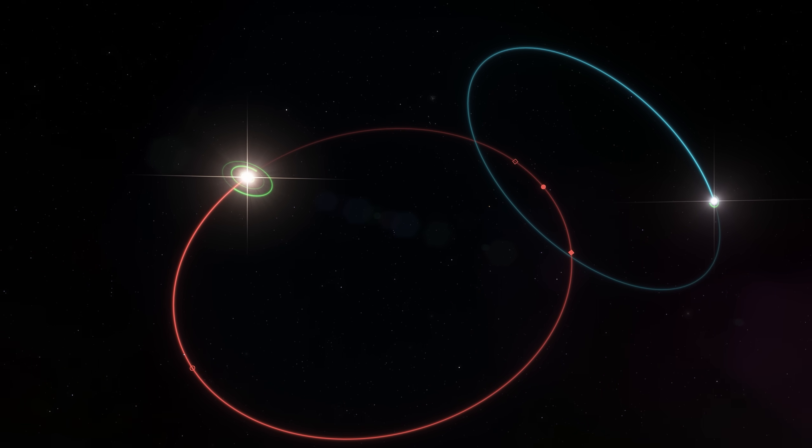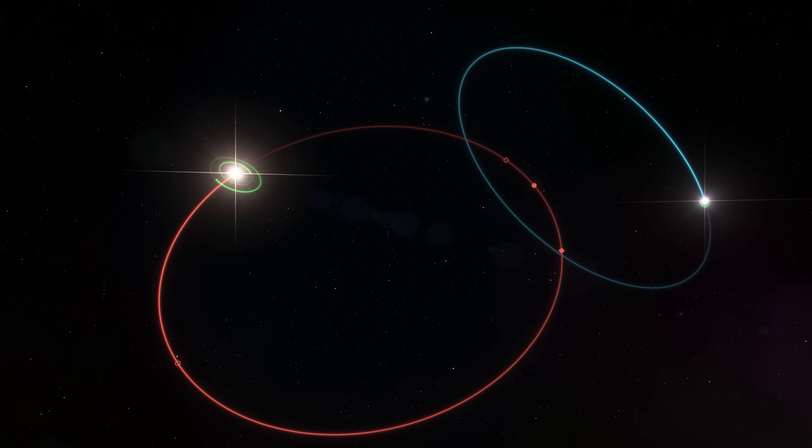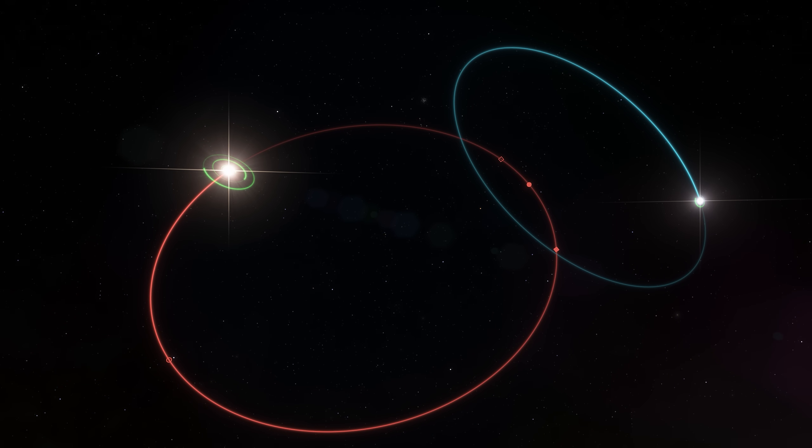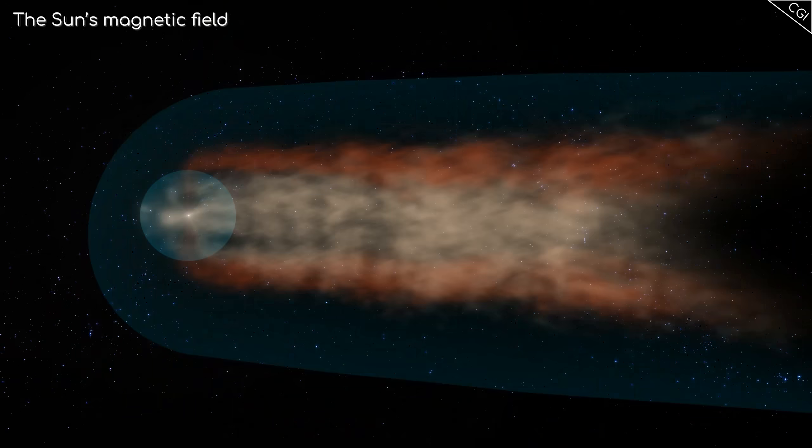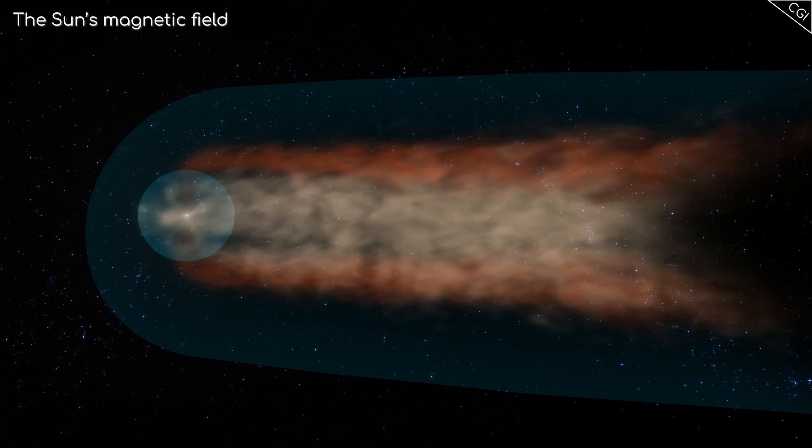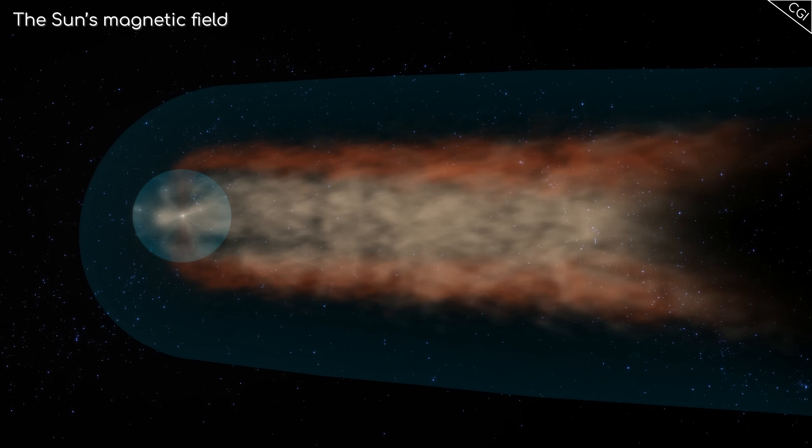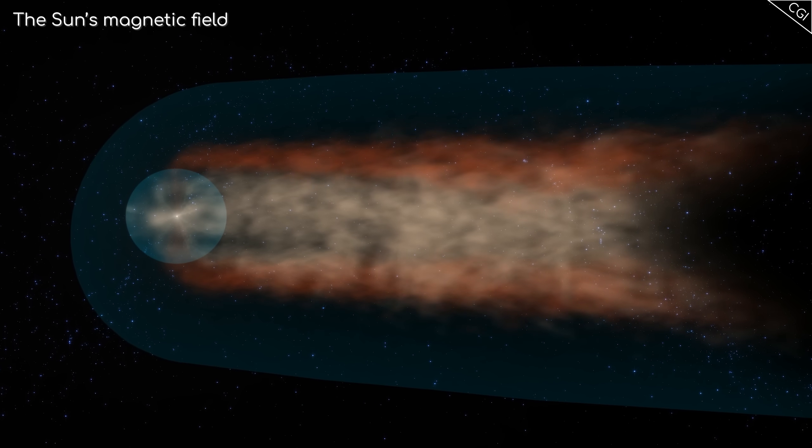The second star would be easily visible in the night sky, but may not make much of an impact during the day, depending on its luminosity. Stellar winds from the other star would have little impact on Earth, as our sun's powerful magnetic field would redirect most of it away.